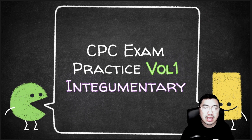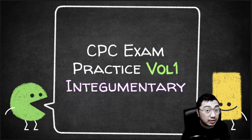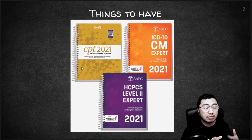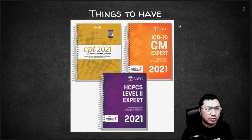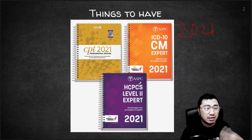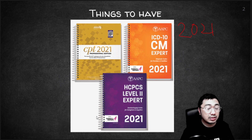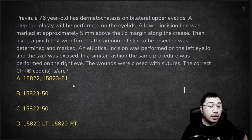Let's have some brief discussion and a few cases about the integumentary system. I'll be posting a separate video covering how to code your repair, adjacent tissue transfer, biopsy, etc. Since I'm getting a lot of requests for CPC practice exams, we'll have a few cases. I highly suggest you get the 2021 updated versions of your books — your CPT, ICD, and HCPCS Level 2. If you don't have the books yet, the CMS PDF version or older versions are fine, but some updated codes may be missing.